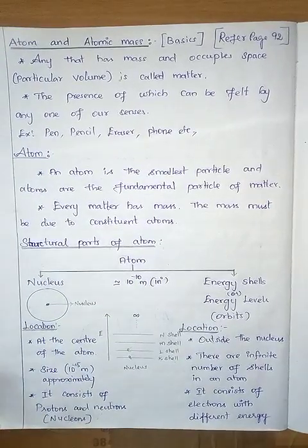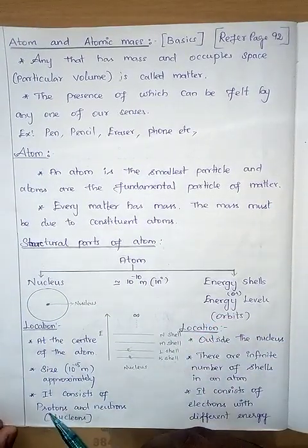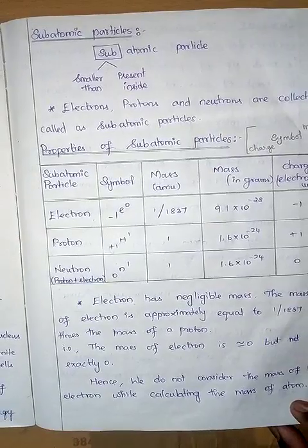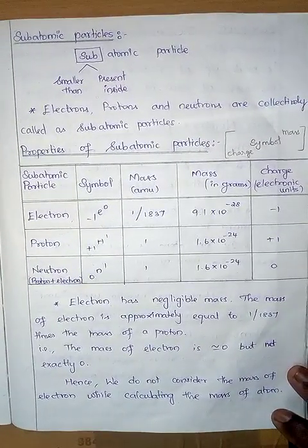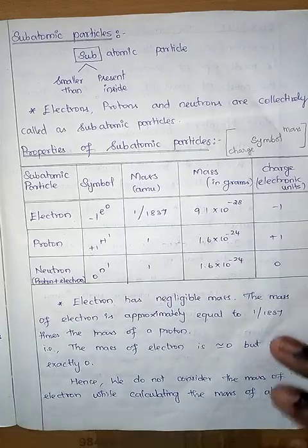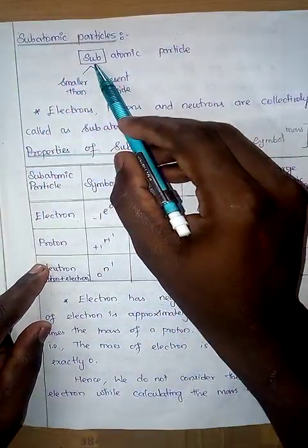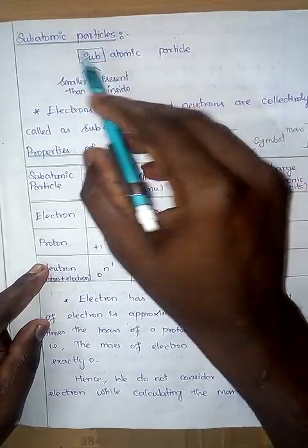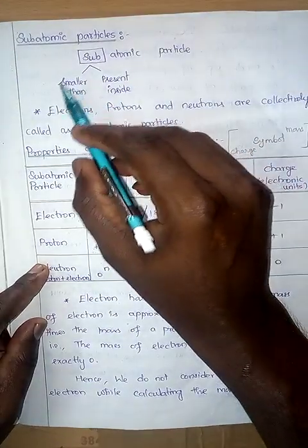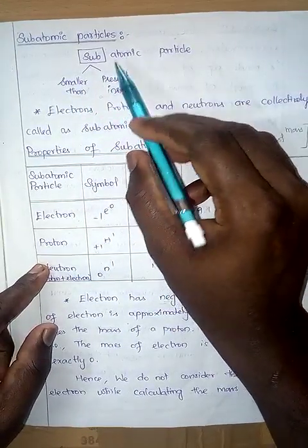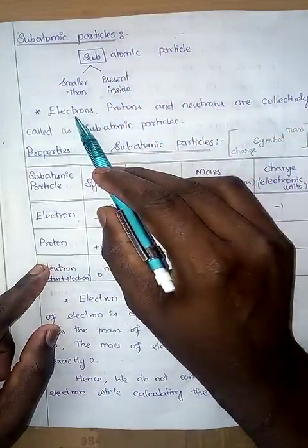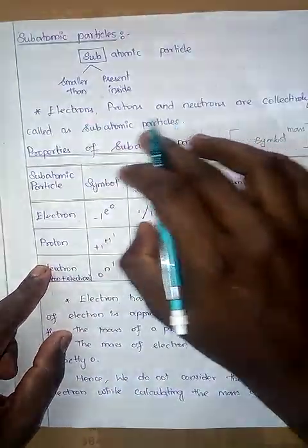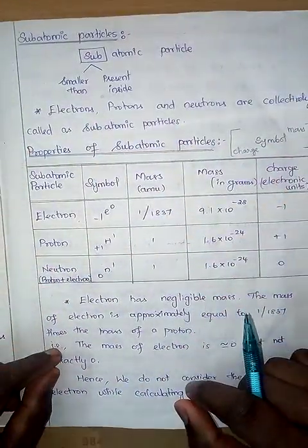So far we have learned three particles: proton, neutron, and electron. These three particles are collectively called subatomic particles. The word 'sub' means smaller than and present inside. Electrons, protons, and neutrons are smaller than the atom and also present inside the atom — that is the reason these three particles are called subatomic particles.